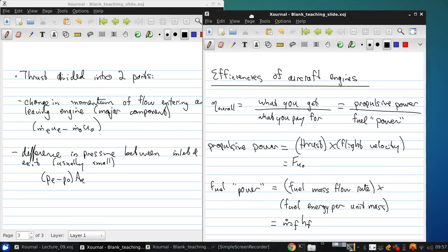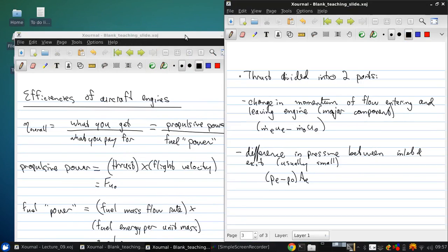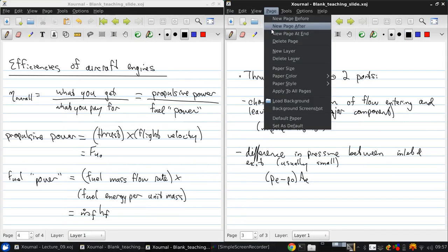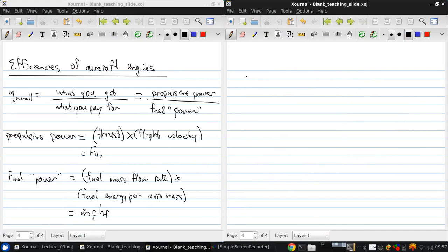So then we can write eta overall equals f times u0 over m dot f times h.